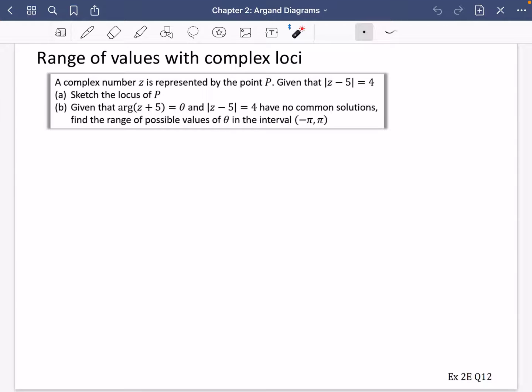Okay, so last video for exercise 2e. I've actually borrowed this question from the mixed exercise and then you can have a go at doing question 12 from 2e. So this is slightly different just because it has a range of values. Instead of saying where two loci intersect, it's actually saying where might they not intersect or what might change about this.